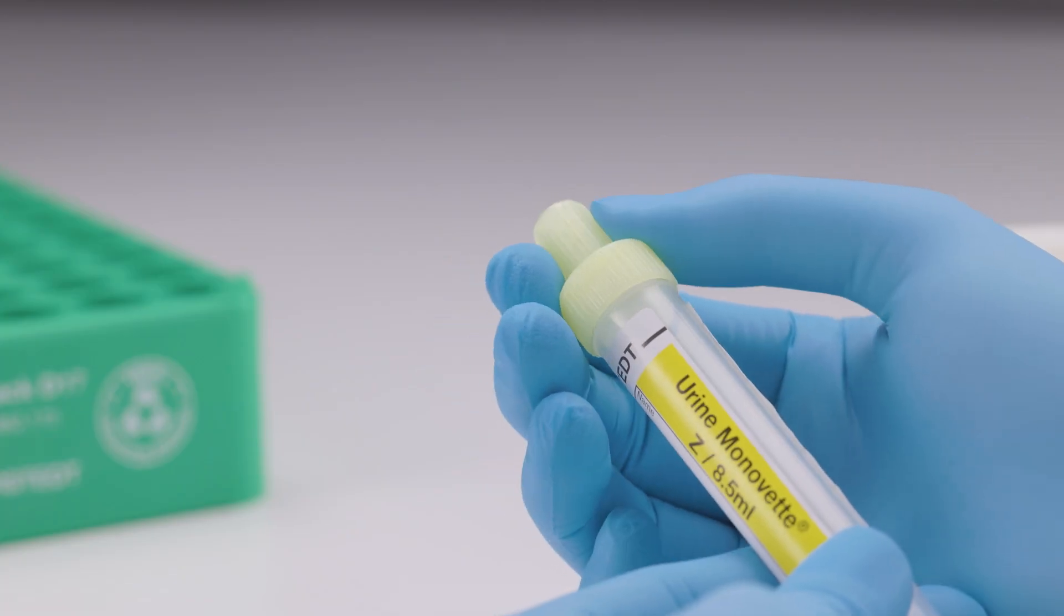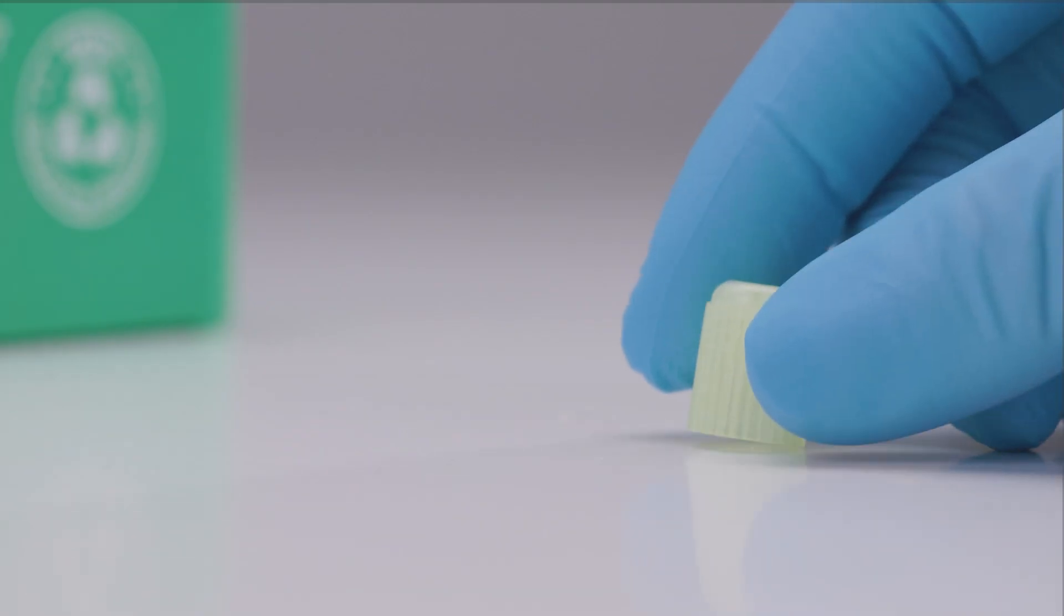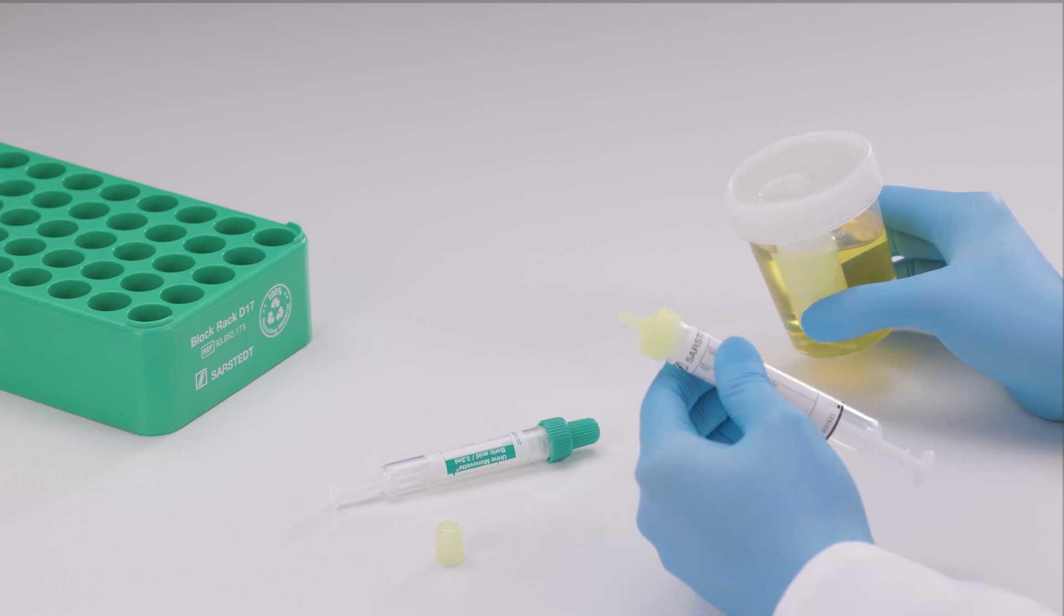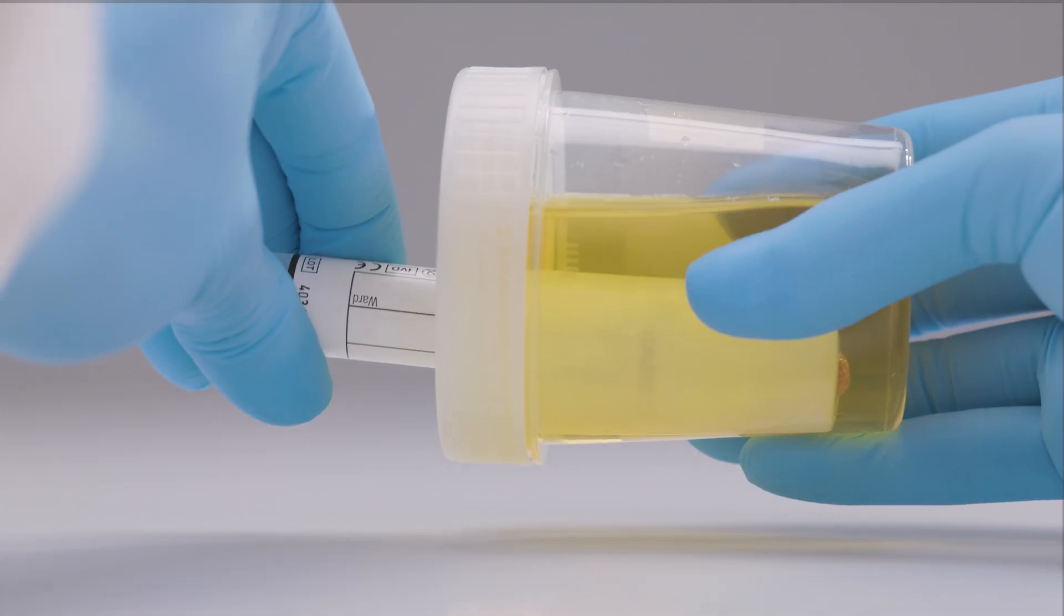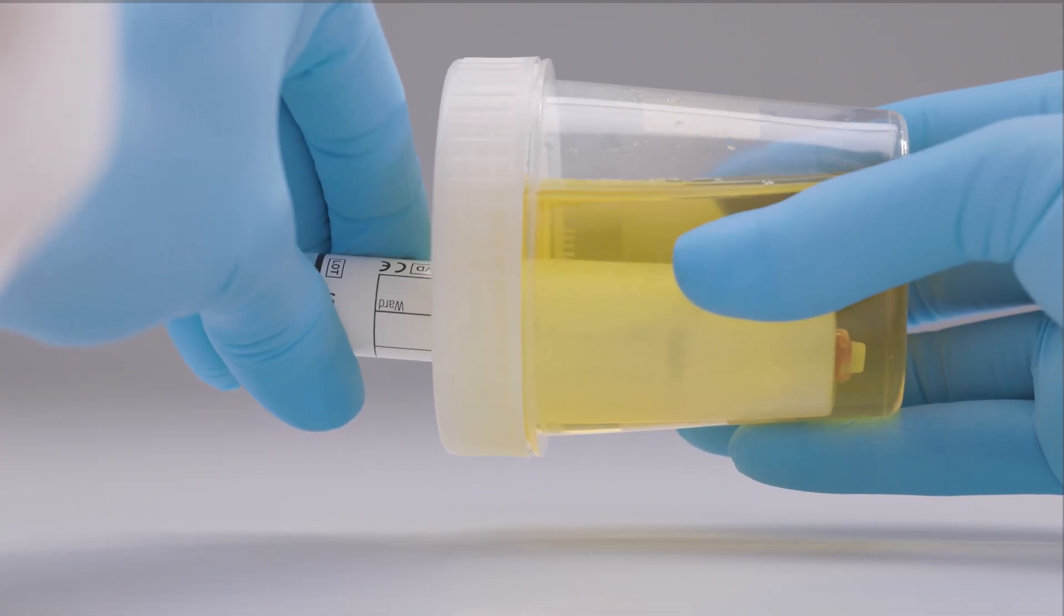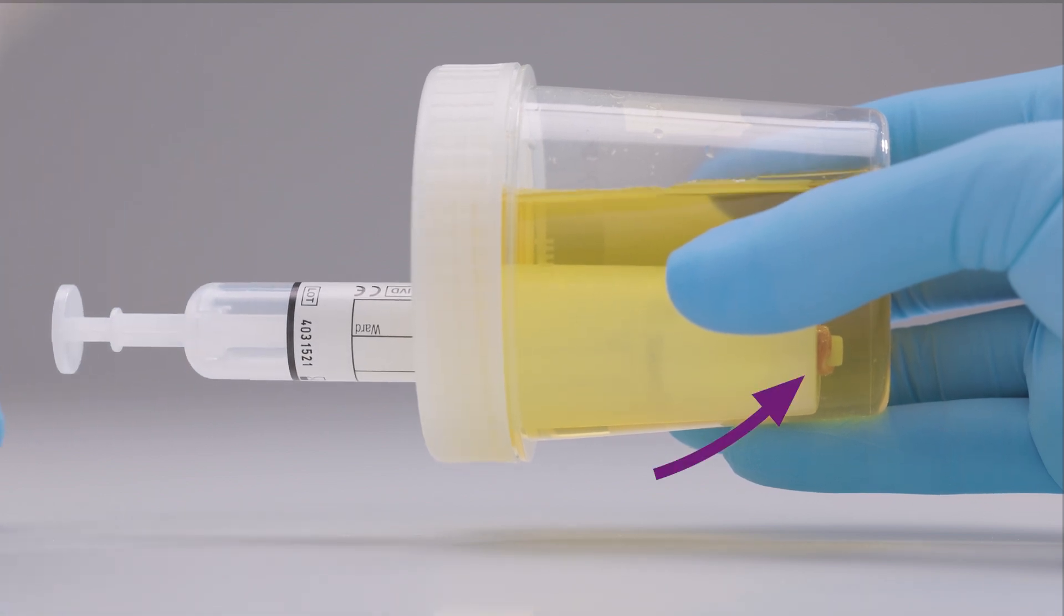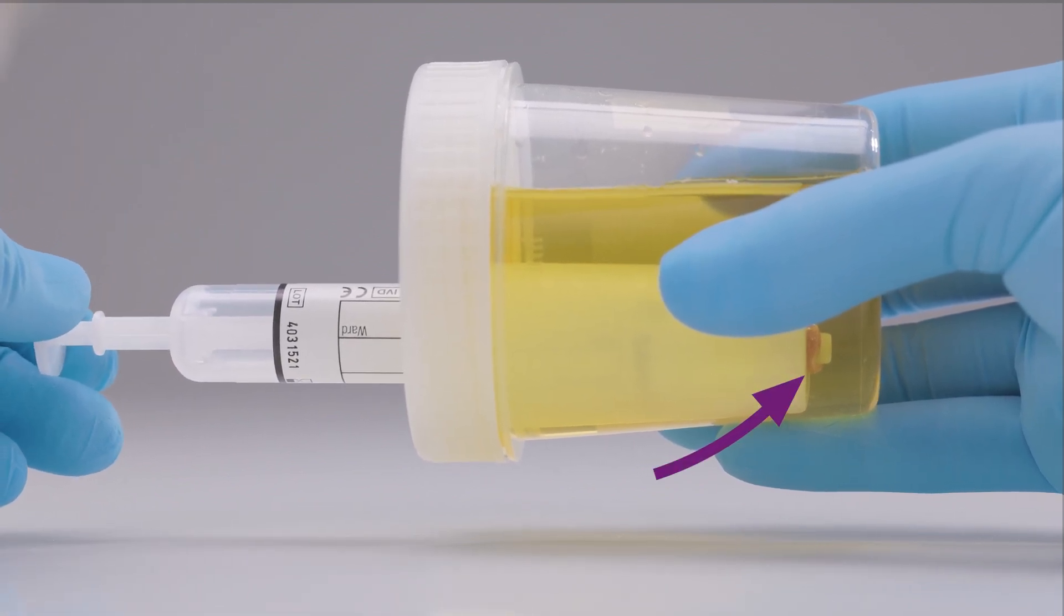Remove the stopper from the tip of the urine monovette and set it aside. Place the NFT cup on its side and guide the tip of the urine monovette into the needle-free transfer unit, ensuring that the tip penetrates the NFT membrane.